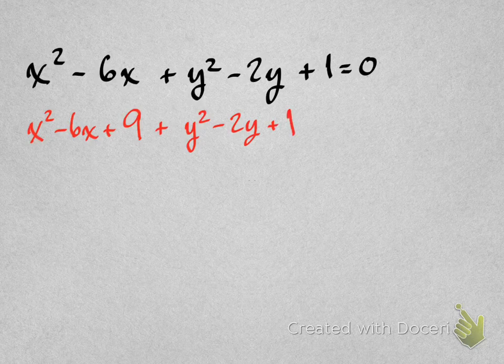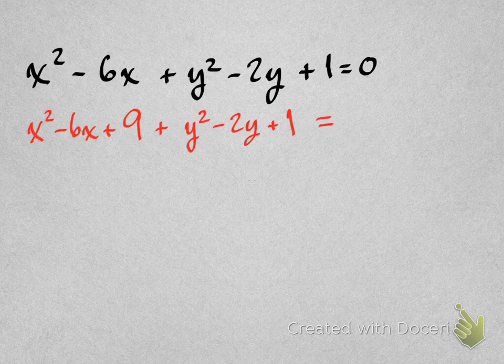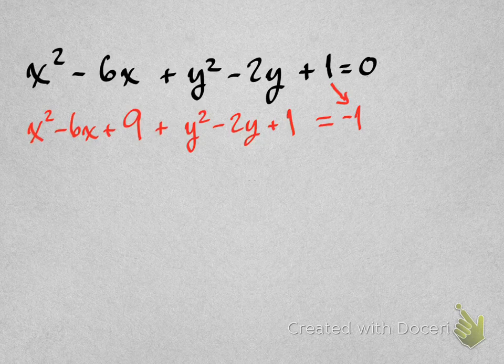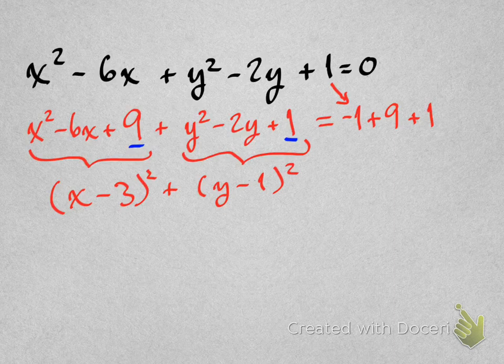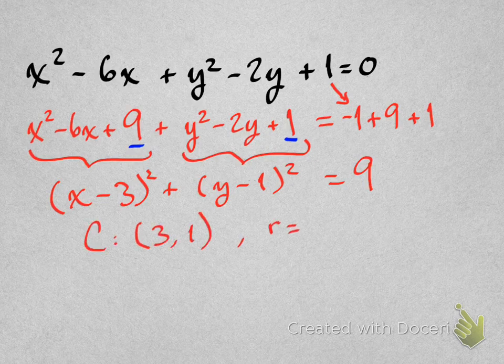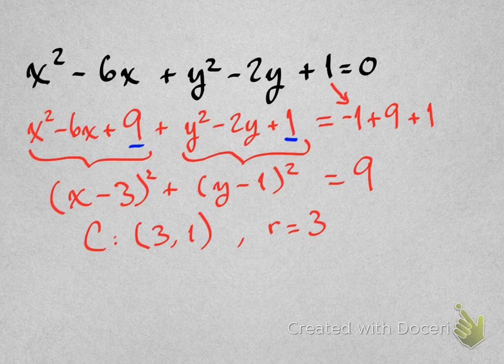So that negative 1 from the left side moves over to the right side, and we've got plus 9 plus 1 from our b over 2 squared. And now we're ready to factor: x minus 3 squared and y minus 1 squared. That equals positive 9 over there on the right side. So we know now that the center is (3, 1), and the radius is 3. There you go. It happens pretty quickly.